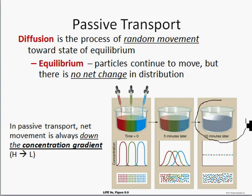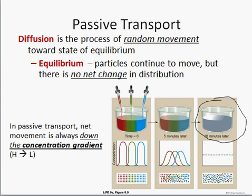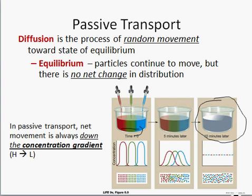No energy is required, and there is movement from a high concentration to a low concentration. The red is going to move towards the right where it's in low concentration, the blue is going to move towards the left, and the green goes in both directions. We get a complete mix or equilibrium of the components.